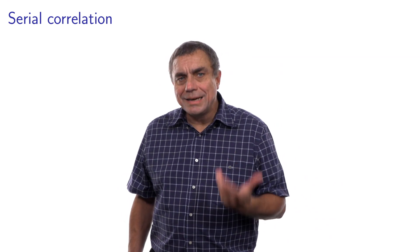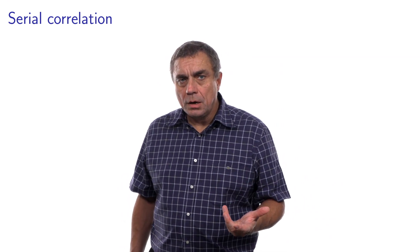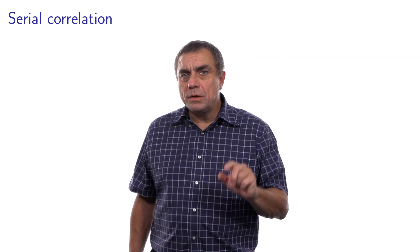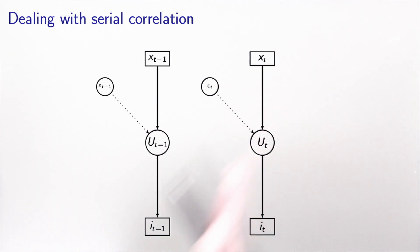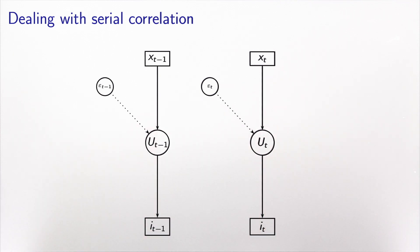This is called serial correlation. In this video, we investigate how to deal with the issue. This is a representation of the static model introduced in the previous video, where we have a choice model for each specific time interval, and they are independent from each other.